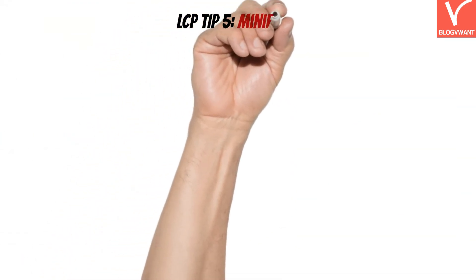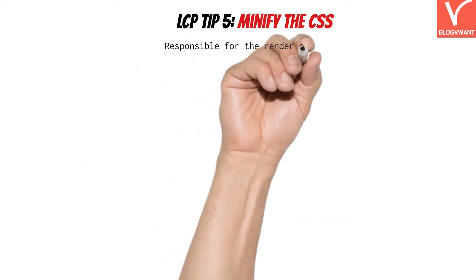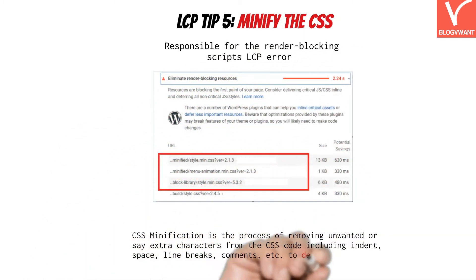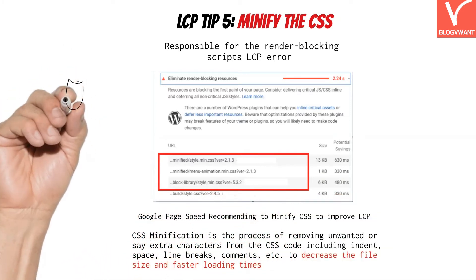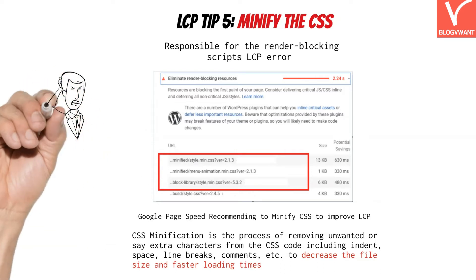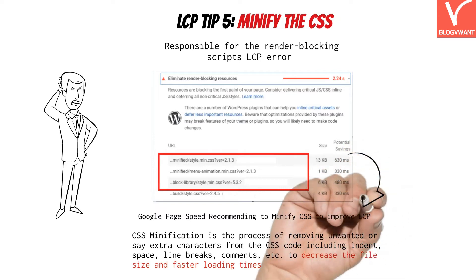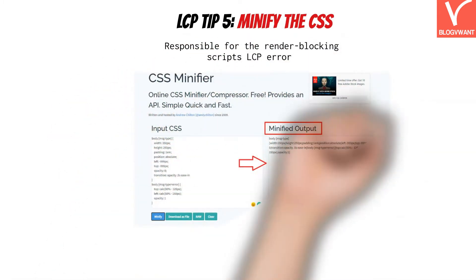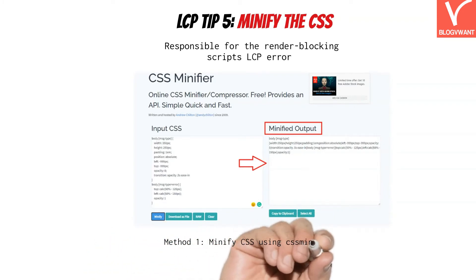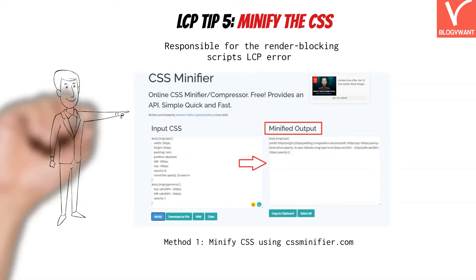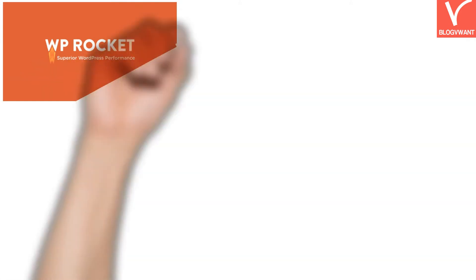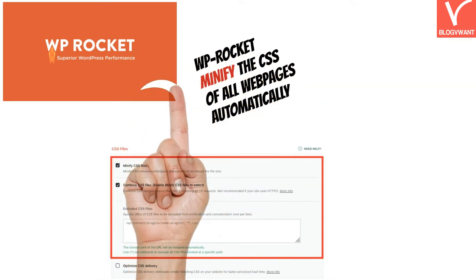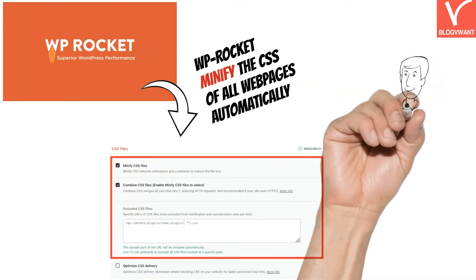LCP Tip 5: Minify the CSS. If the Google PageSpeed report shows CSS files under 'Eliminate Render Blocking Resources', it's time to minify and defer the CSS. CSS minification is the process of removing extra characters from the CSS code to decrease file size and achieve faster loading times, which improves the LCP score. To minify CSS there are two methods: first, manually use free online CSS minifier tools, though you'd have to minify and upload the code for each page. Alternatively, use the WP Rocket plugin to automatically minify CSS — just install the plugin, navigate to the File Optimization tab, and enable the Minify CSS Files option.